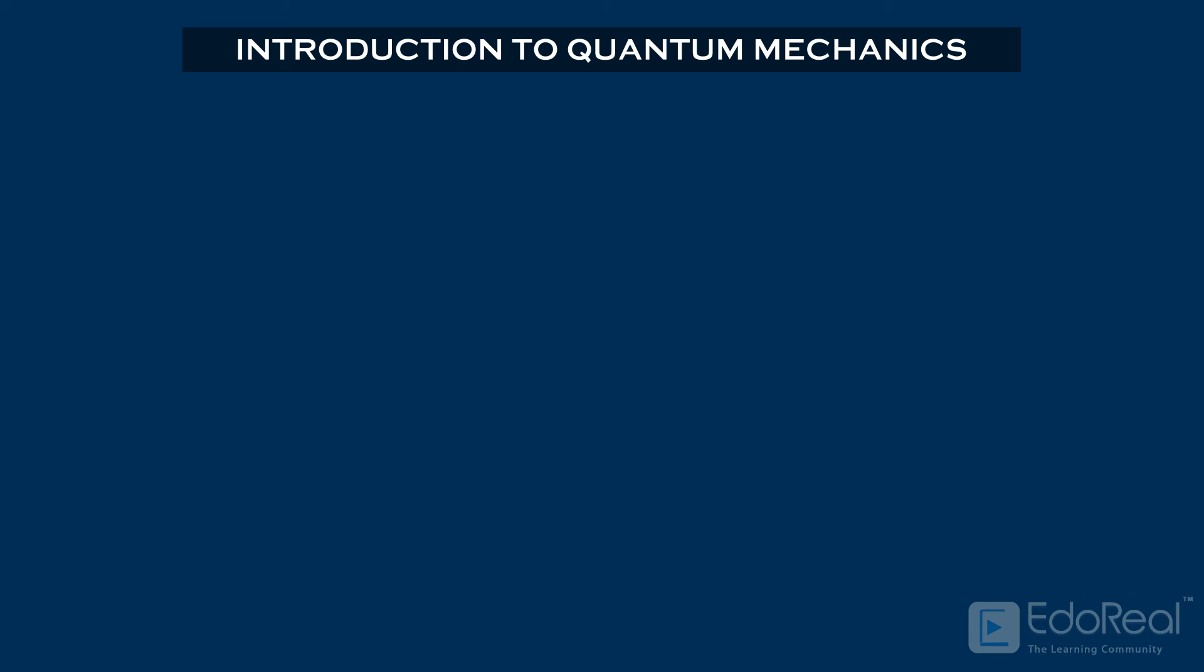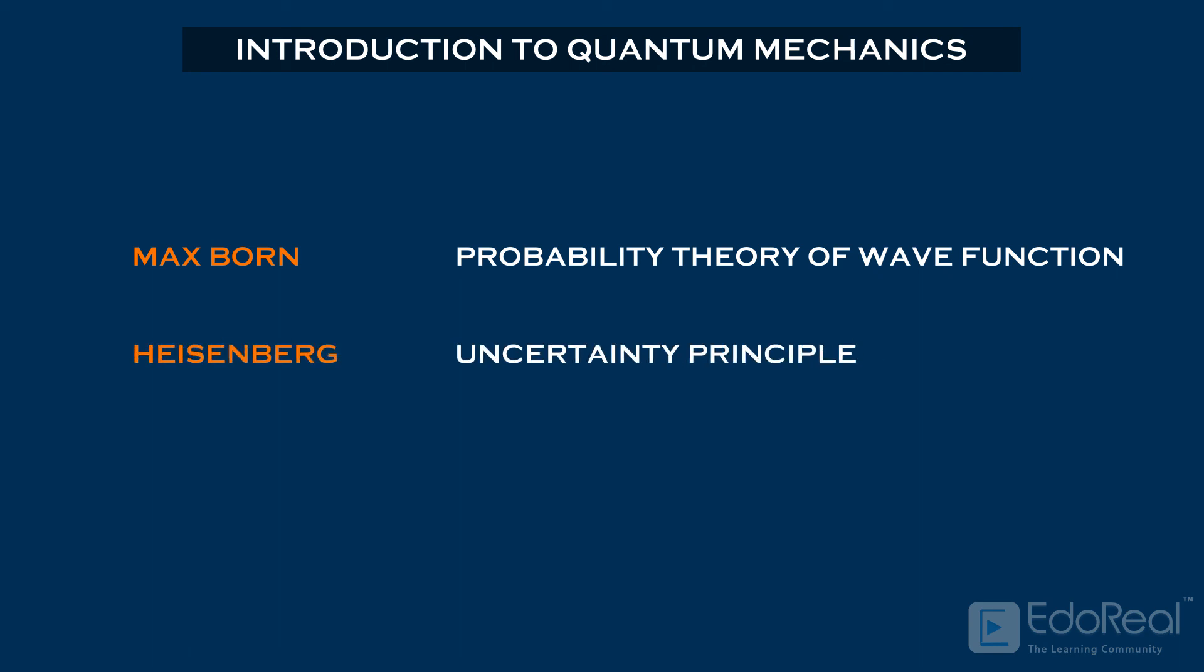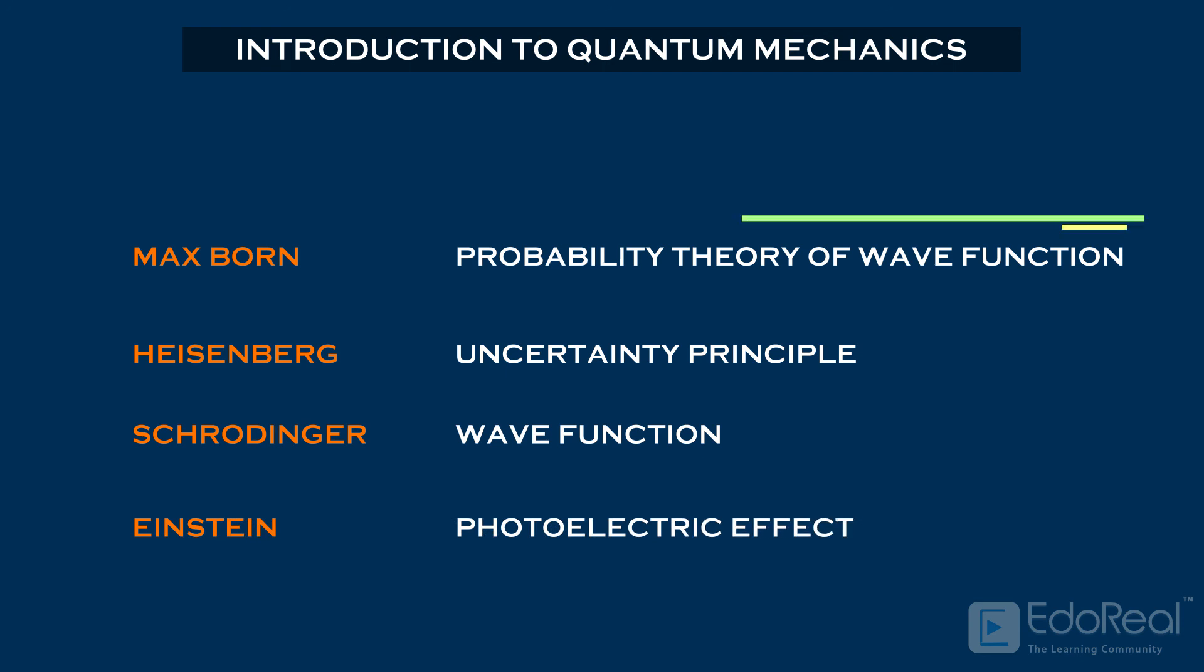In 1926, Max Born properly interpreted wave function using probability theory. Heisenberg introduced the uncertainty principle. And Schrodinger developed a well-known differential equation for a wave function. Einstein's ideas on photons, etc., are the foundations that developed quantum mechanics.